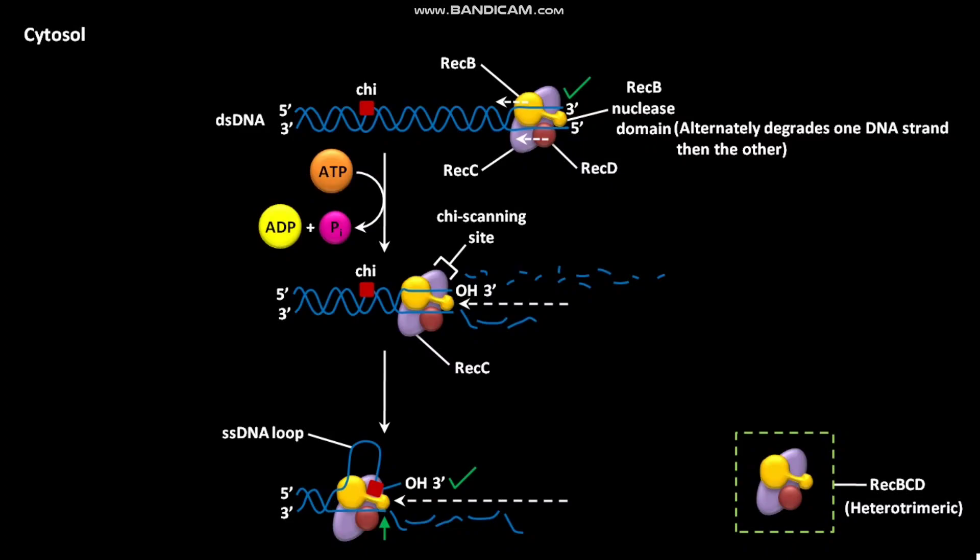This process creates a ssDNA loop with a three-prime end and only the strand with the five-prime end becomes accessible to the REC-B nuclease domain. The ssDNA with a three-prime end is used during subsequent steps in recombination. This is the chi-bound-in scanning site.